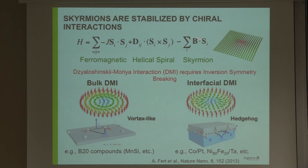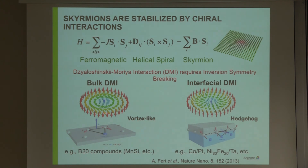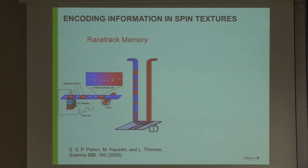We have the Heisenberg exchange, the DMI term, and Zeeman energy terms, and together they allow for the stabilization of skyrmions. In bulk materials where they were first discovered, the intrinsic DM interaction typically produces a vortex-like or Bloch skyrmion, where the wall spirals within the plane. On the other hand, at the interface, if you have inversion symmetry breaking and a combination of a heavy metal with a ferromagnet, you have an interfacial DMI which tends to stabilize a Néel skyrmion — more like the hedgehog shown earlier.